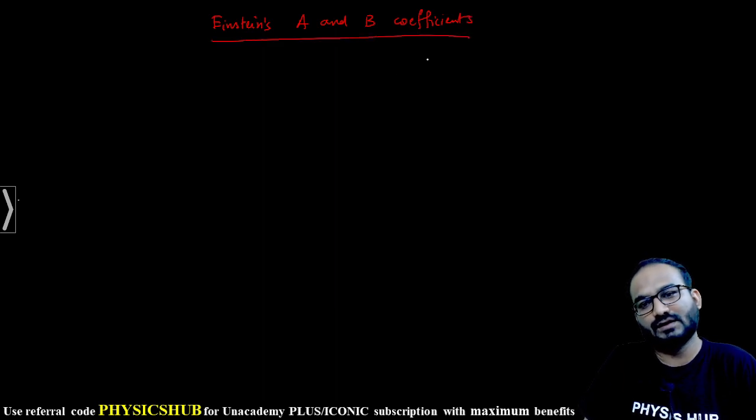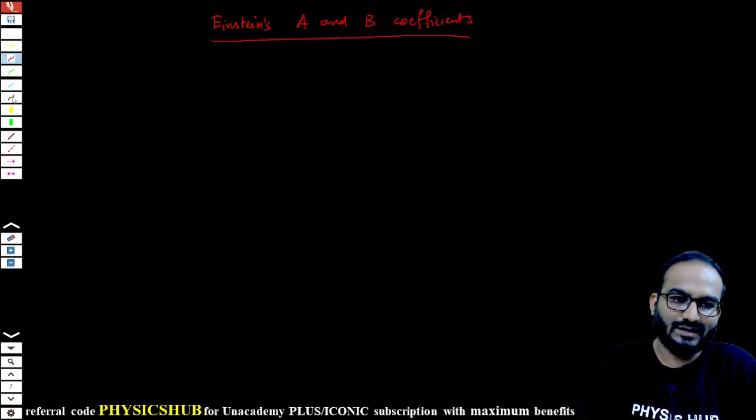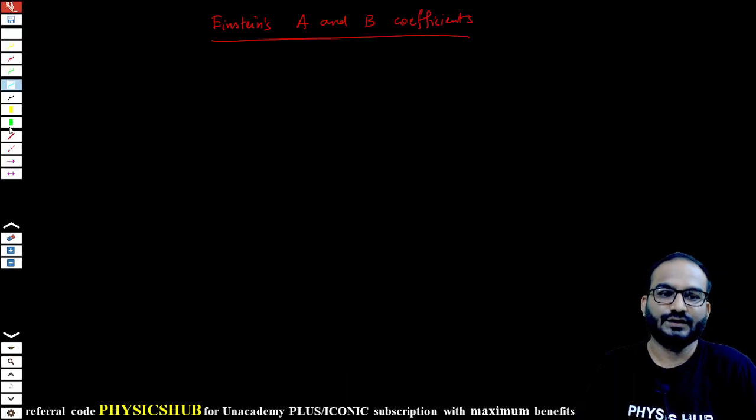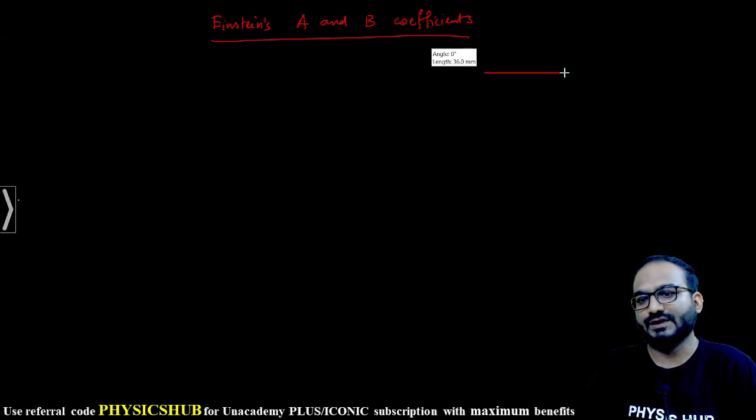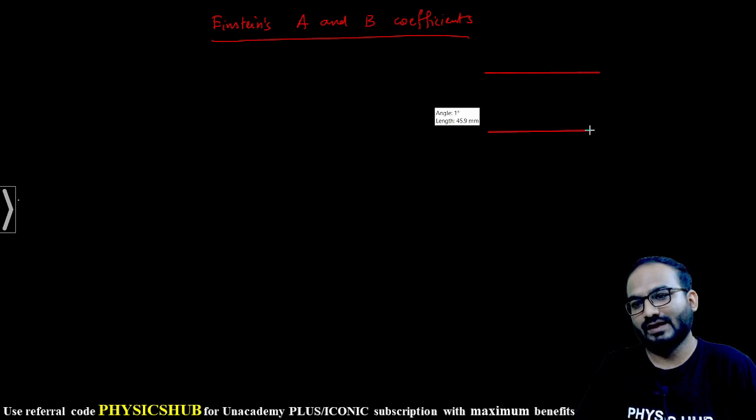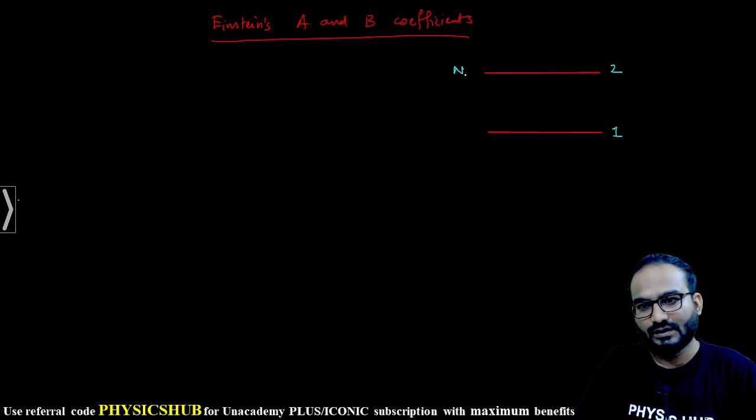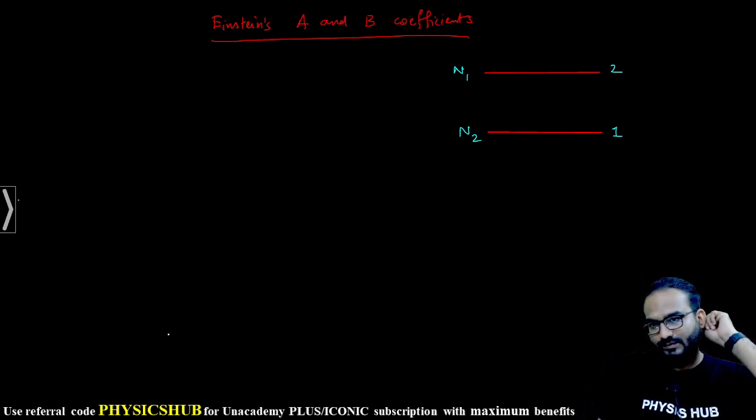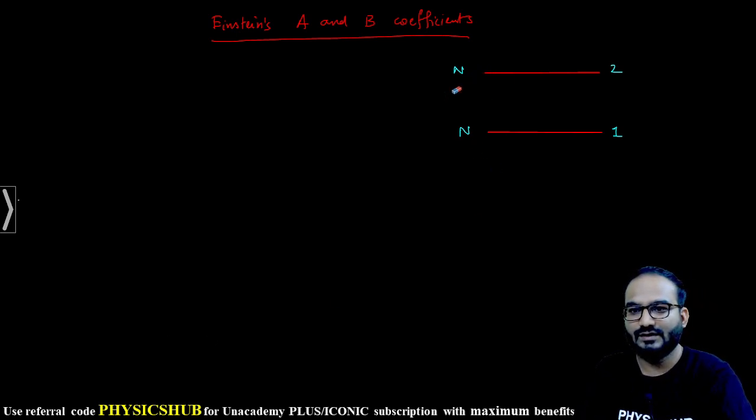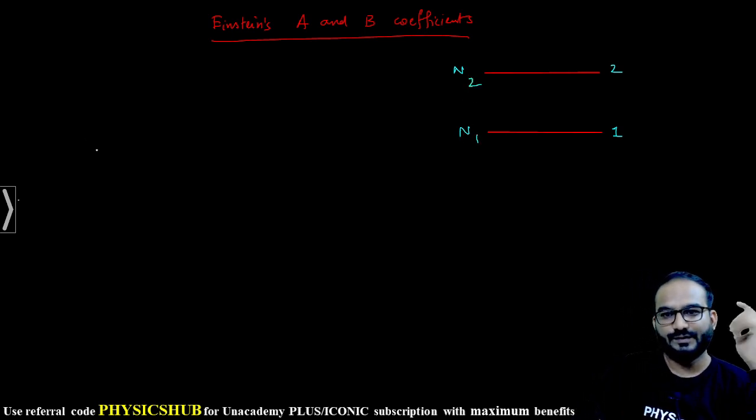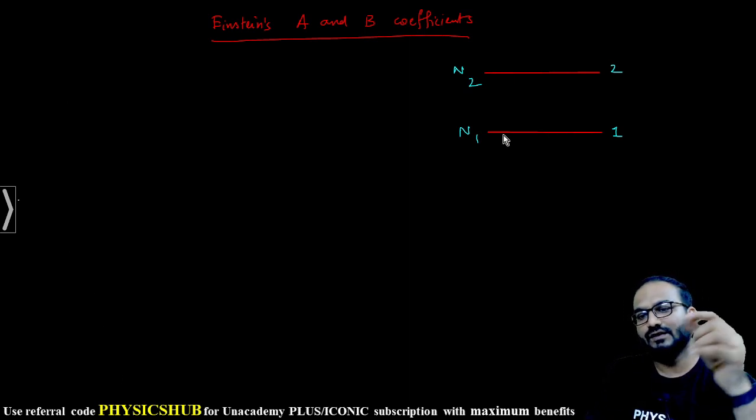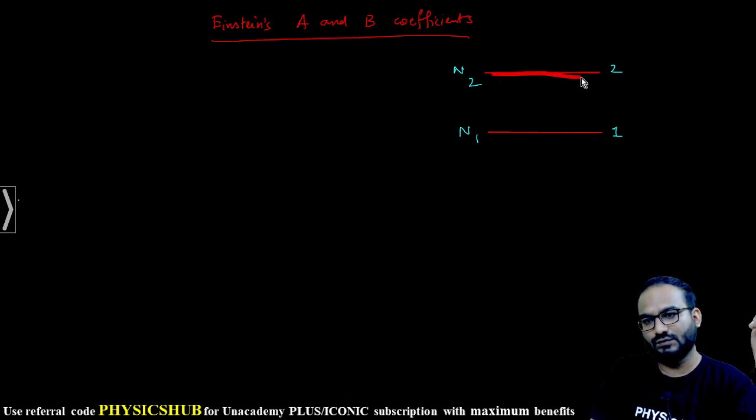Einstein's A and B coefficients are important in the background of laser. Let's consider that we have two states, state 1 and state 2. It has N1 number of particles here and N2 number of particles. This is N1 and this is N2.